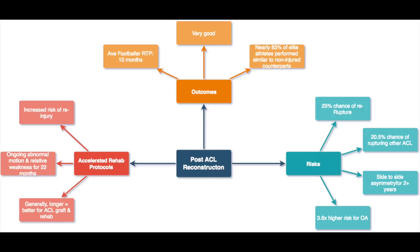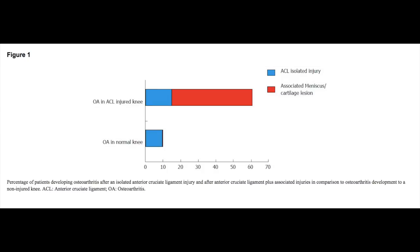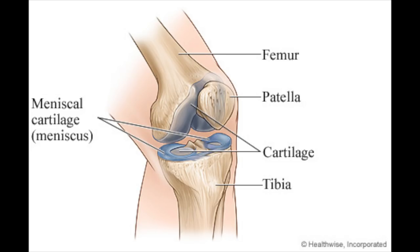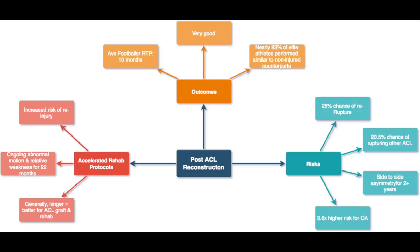The outcomes are excellent — the majority of players do return to their pre-injury levels, which is great news for Rob. That being said, there are some risks associated. There's a 25% chance of re-rupture, and nearly a 21% chance of rupturing the other ACL due to compensation. In addition, there's a 3.5 times higher risk of developing osteoarthritis, where the cartilage is wearing away. A recent example was Nabil Fekir with Liverpool — they turned down that transfer because there was too much degeneration. And there tends to be some asymmetry for about two years.